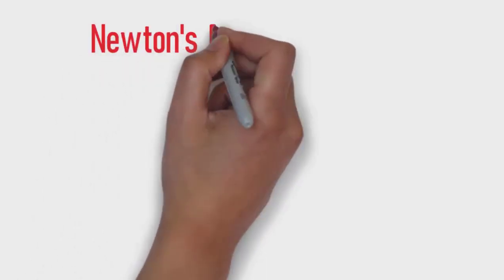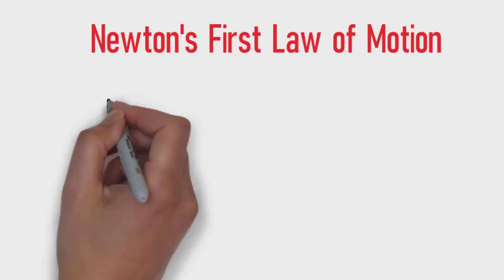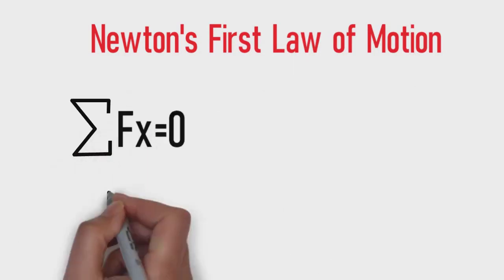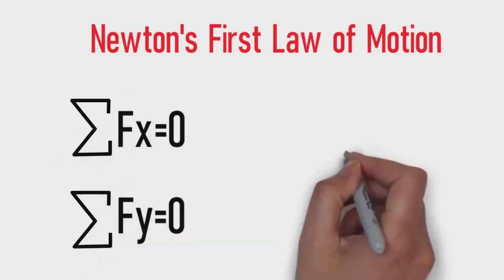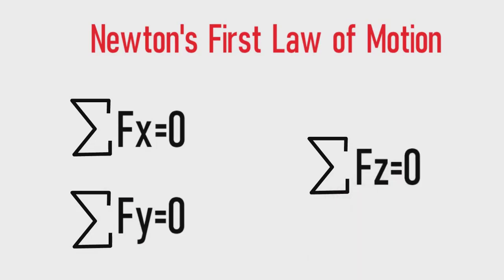To have equilibrium, Newton's first law of motion must be satisfied, which is the resultant force must be equal to zero. These are called equilibrium equations.